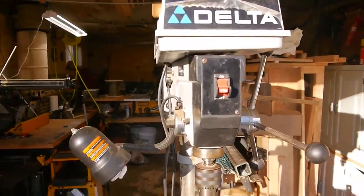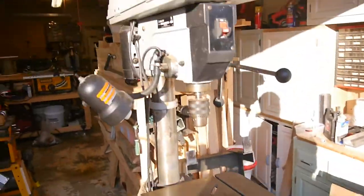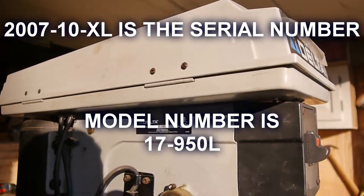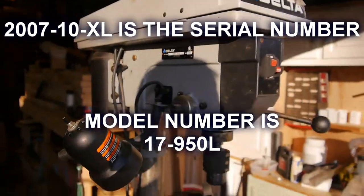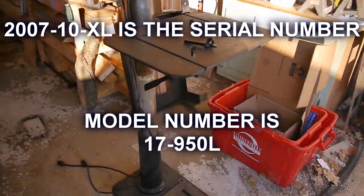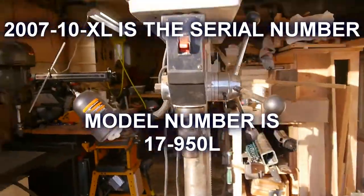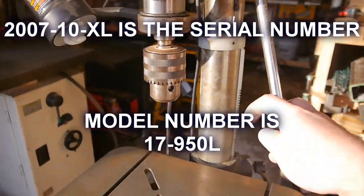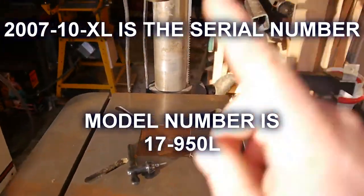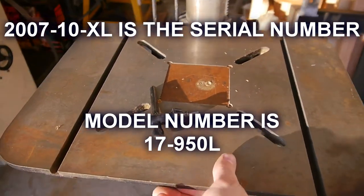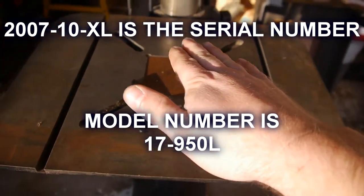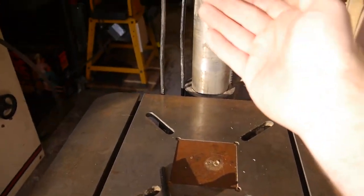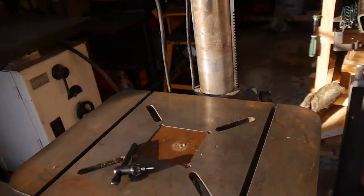Okay, so this is the old Delta drill press. It's a 16 and a half inch. It's the 2007 10-XL. So 10 years old. I bought this new from Lowe's and been a great little drill press. No real complaints other than the table. I can never quite get it perfectly normal to the chuck. It was really annoying.